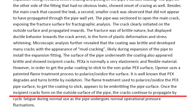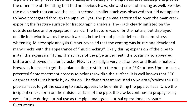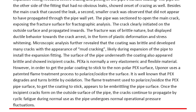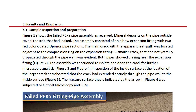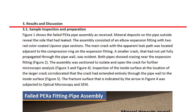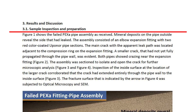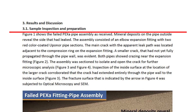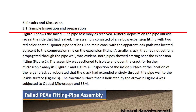Once the incipient cracks form on the outside surface of the pipe, the cracks continue to propagate by cyclic fatigue during normal use as the pipe undergoes operational pressure fluctuations.